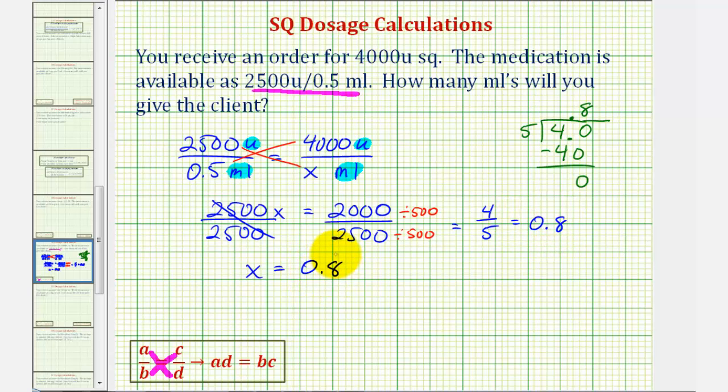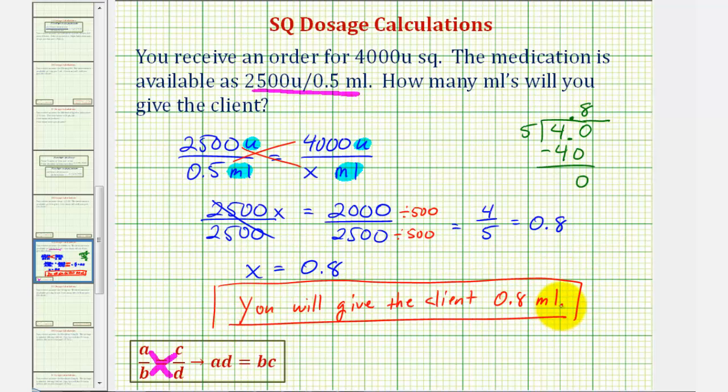So if X equals 0.8, then if the order is for 4,000 units SQ, you need to give the client 0.8 milliliters, or 8 tenths of a milliliter. I hope you found this explanation helpful.